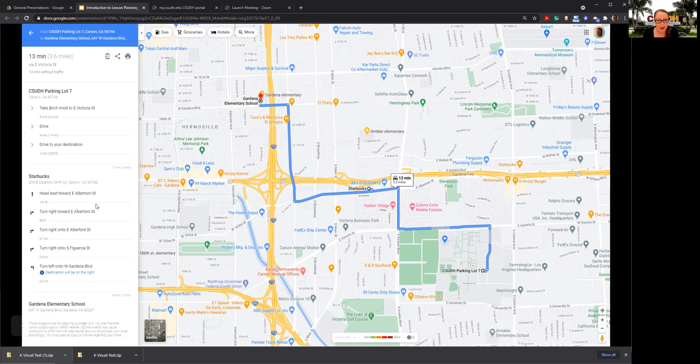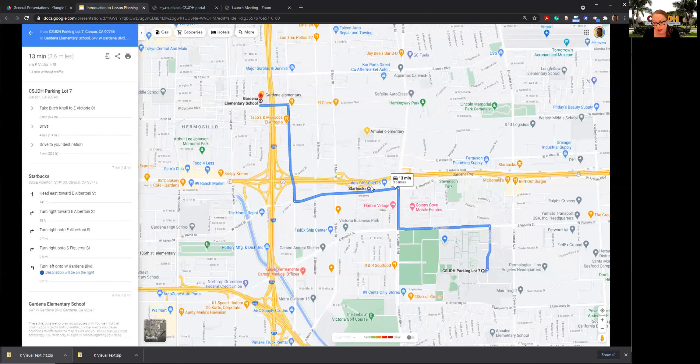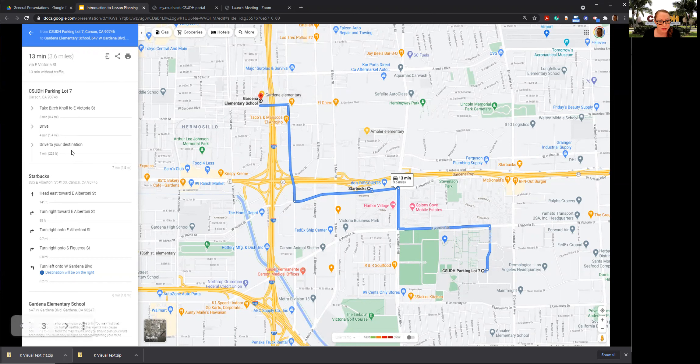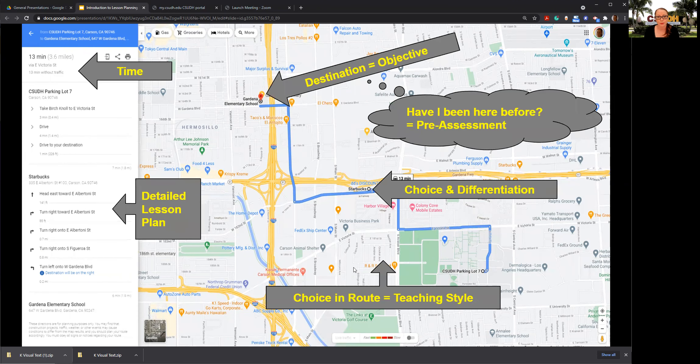That is essentially an analogy for what we're doing when we lesson plan. I went ahead and added a destination along the way. I put in a Starbucks because I might want to stop and get some coffee. Once I put all that in, it plans it out for me and gives me a detailed set of directions. You've all been doing this for some time. This is an analogy for lesson planning.